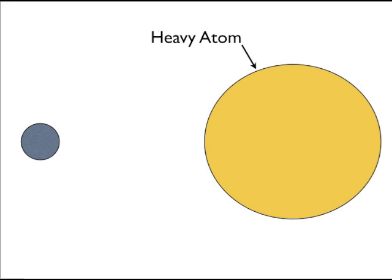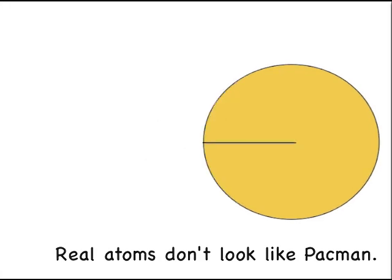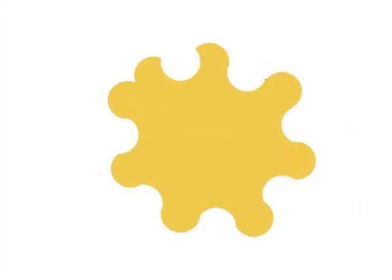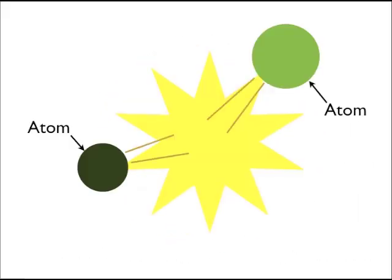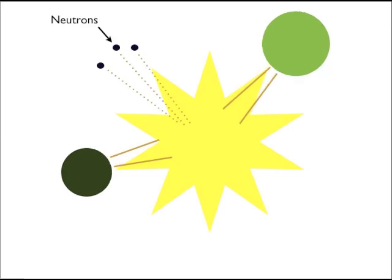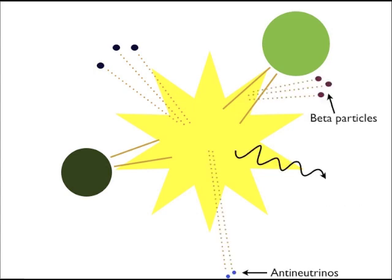So the atom absorbs the neutron and gets really excited and splits in two. These two new atoms are smaller than the original atom, but usually they're not the same size. Neutrons are also released during fission, as are gamma rays, beta particles, and anti-neutrinos.